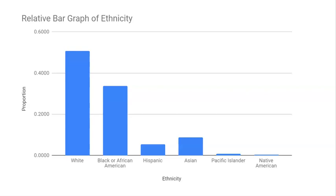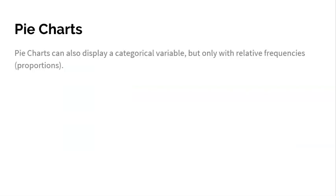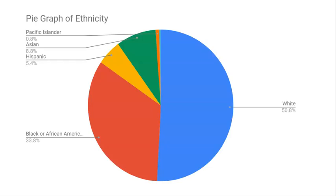The third way to display categorical data is with a pie chart. Keep in mind that pie charts can only show relative frequencies — proportions or percentages. They cannot show counts. Here you can easily see that African Americans and whites are the two much larger groups and all the others are much smaller. So of the 260 people, you can see the percentage breakdown for each ethnicity. It's a nice, pretty way to visually display a categorical variable.